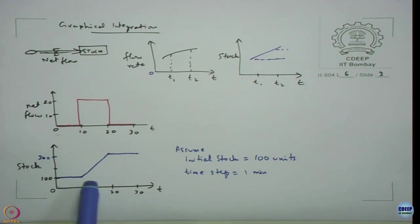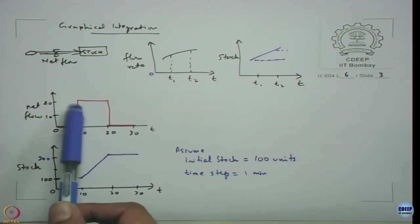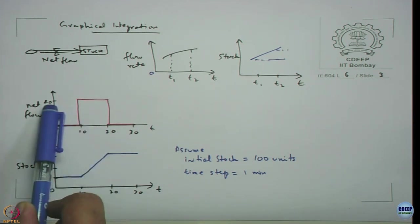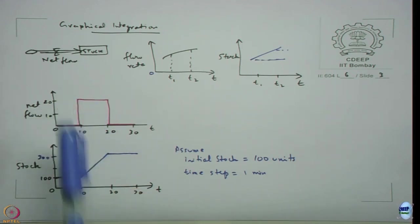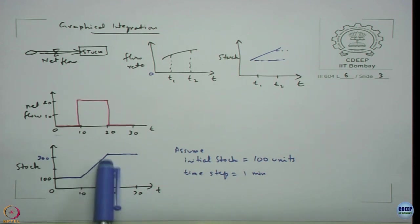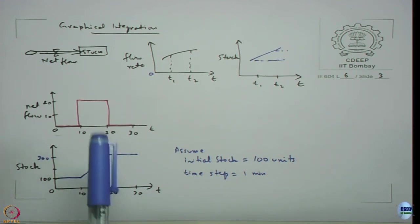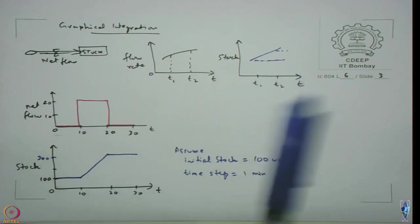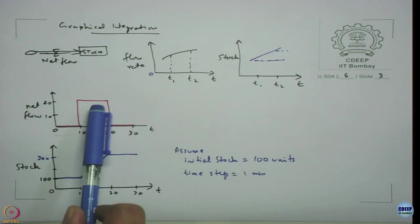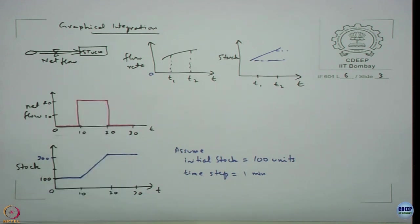You can assume a time step of 1 minute. Every minute I am adding 20 units into the system. From time 10 to 11 it goes from 100 to 120, then 140, 160, 180, 200, 220, 240, 260, 280, 300. So if every time step I am getting an equal amount which is being added, this gives us the linear ramp behavior.